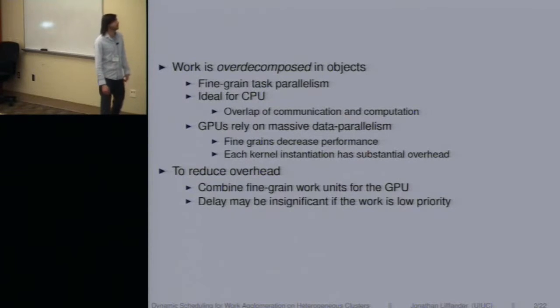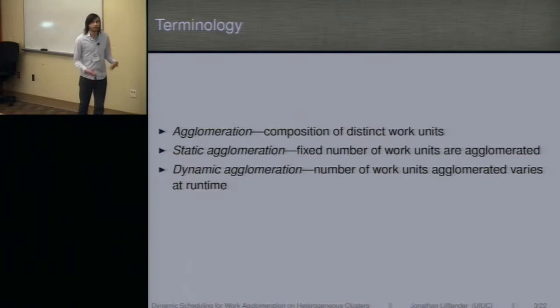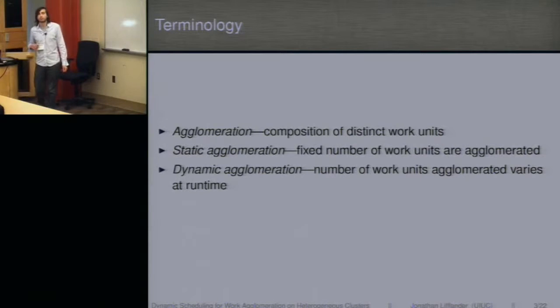So to reduce overhead, you can actually combine these fine-grained work units for the GPU, and you may delay the work by combining these if you have to wait for more work units, but that delay may be insignificant if the work is low-priority. The terminology I'm going to use: when I talk about agglomeration, I'm just talking about the composition of some distinct work units. Static agglomeration is defined as a fixed number of work units agglomerated, basically using application-specific knowledge to combine those in the best way the application knows how. Dynamic agglomeration is varying this number of work units at runtime. Based on what the runtime sees is the available work, whether the processor's gone idle in terms of overlapping copy, it can make a more introspective decision on whether to agglomerate work now or wait for more work units to arrive.